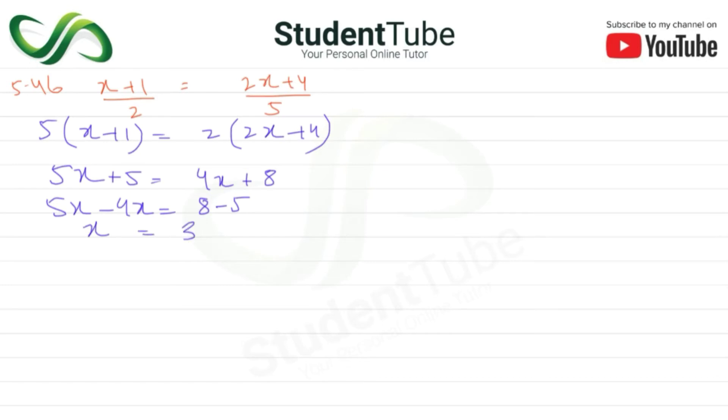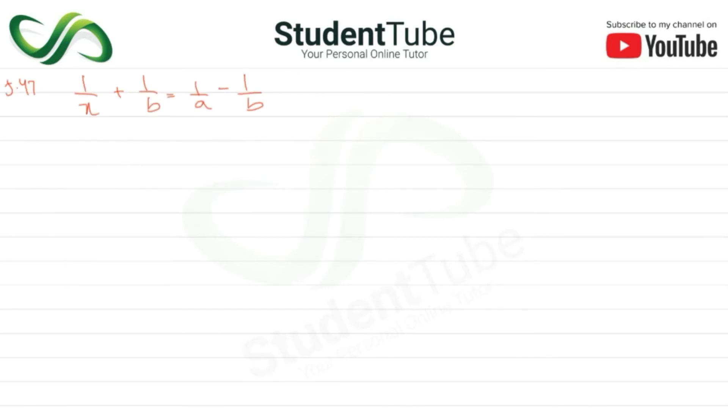So x equals 3. Answer. Question number 5.47: we are going to do (x+1)/x, and the rest we will take as 1/a - 1/b.